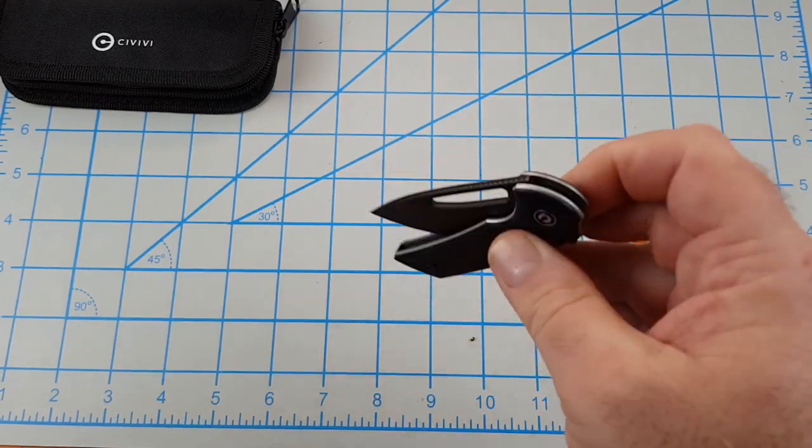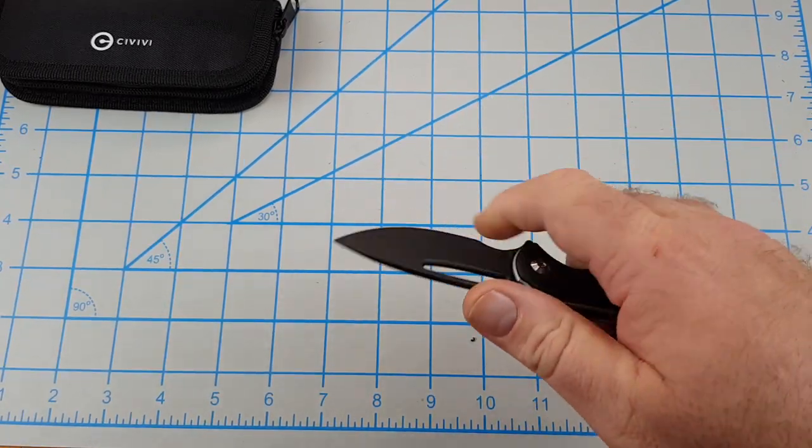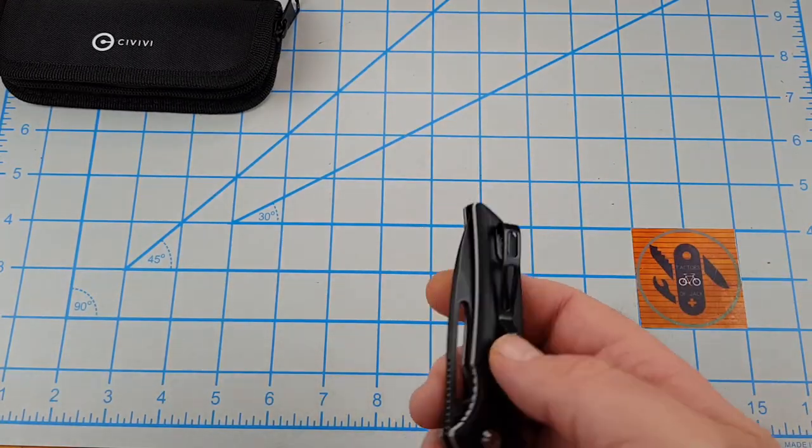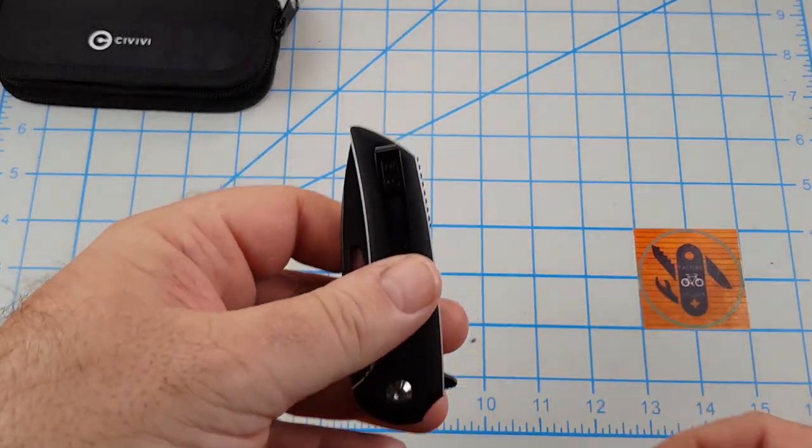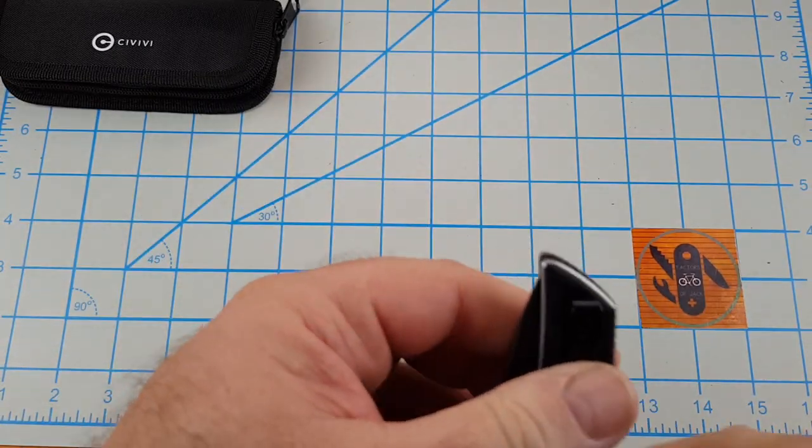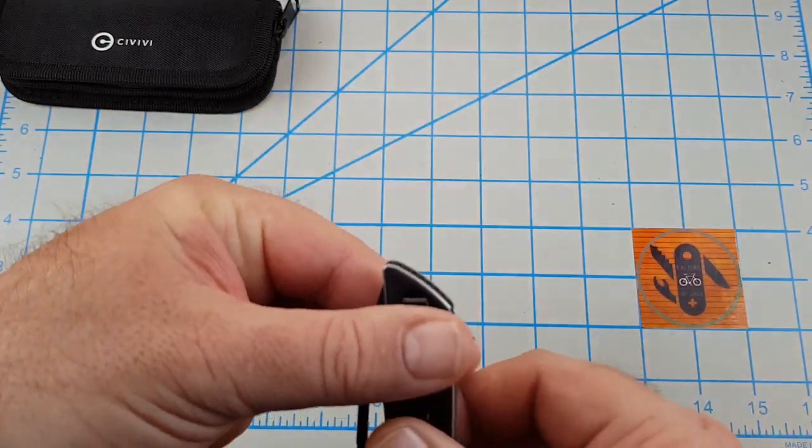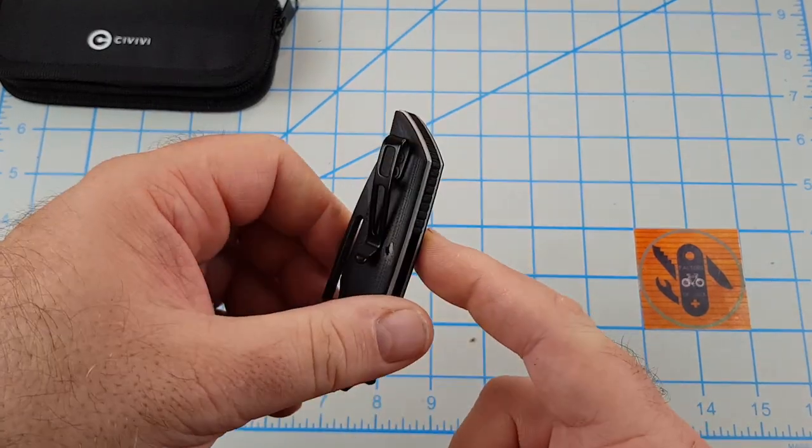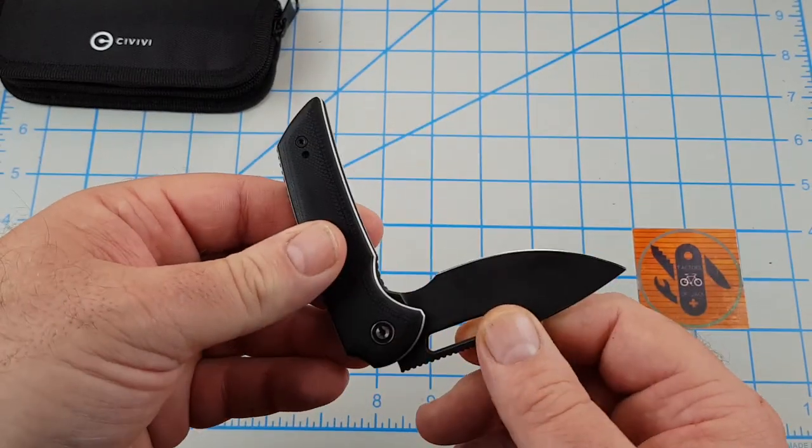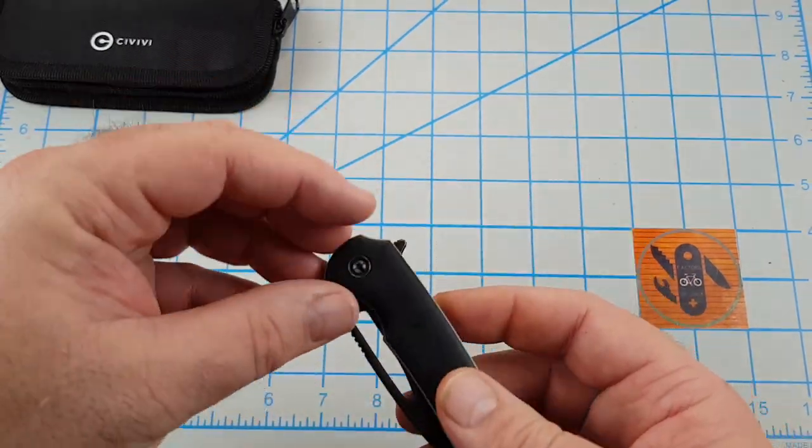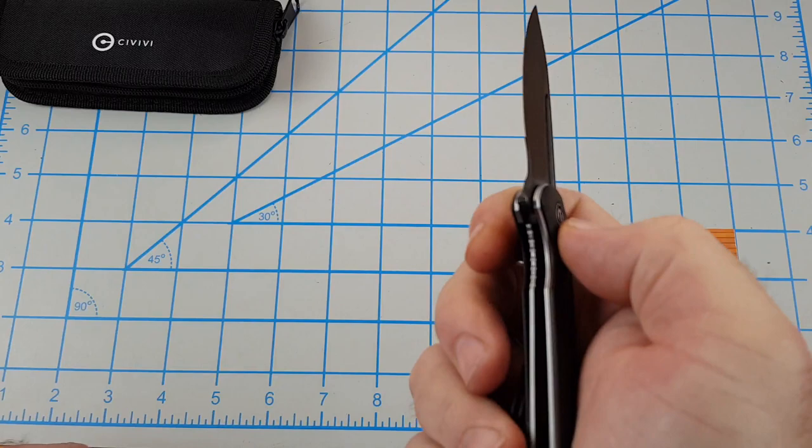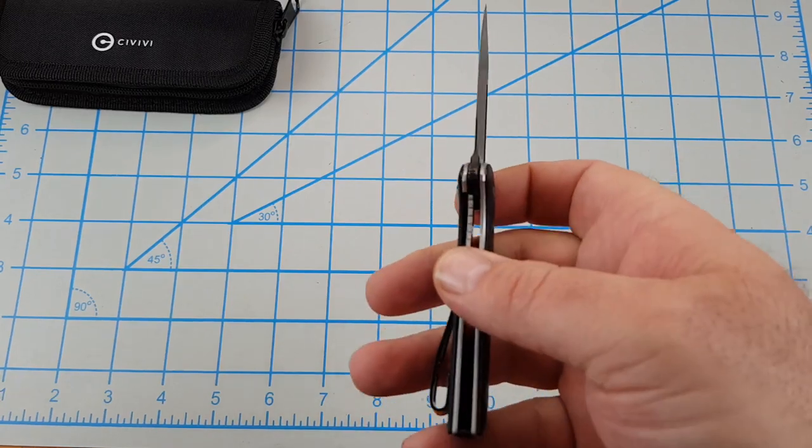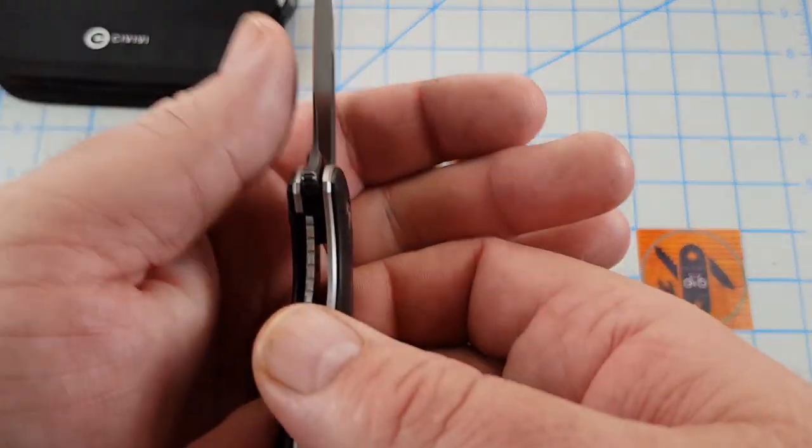This thing's a slicey little dude. I've cut some cardboard and paper and played with it. Pocket clip, you got a deep carry pocket clip, although it's going to be semi-deep carry. You're going to have a little bit sticking out. It is right hand, left hand, tip up, which is good.